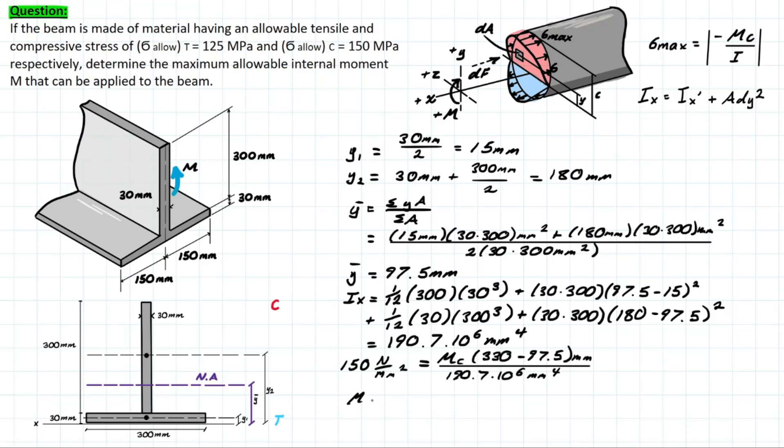Solving for the moment, you're going to be left with 123 times 10 to the 6 newton-millimeters. If we want it in a more usable unit, we can write it as 123 kilonewton-meters.